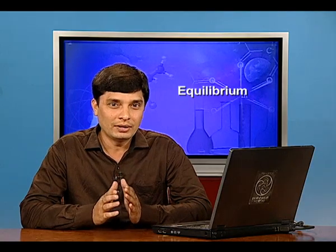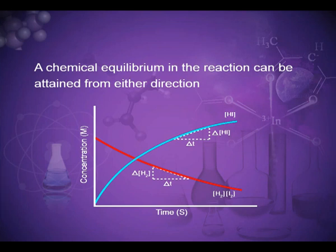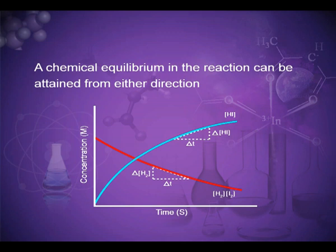A chemical equilibrium can be attained from either direction, as shown in a concentration vs. time graph. As time proceeds, the concentrations of reactants hydrogen and iodine decrease as hydrogen iodide is formed, while the concentration of the product HI increases. At one point, the concentration of H₂ and I₂ become equal to the concentration of HI — that point is known as the equilibrium point.